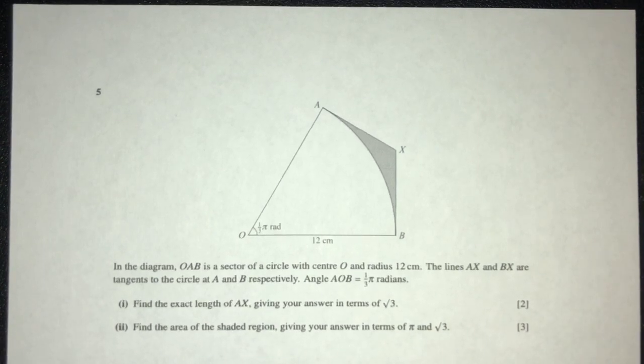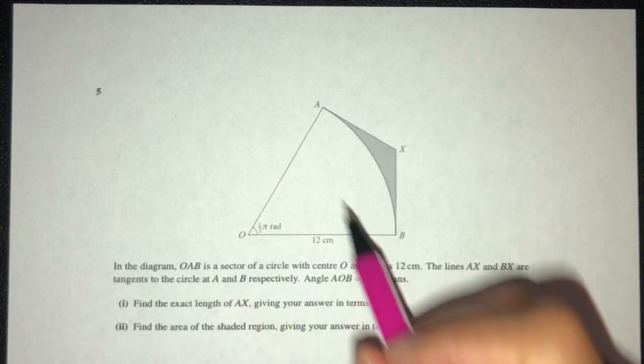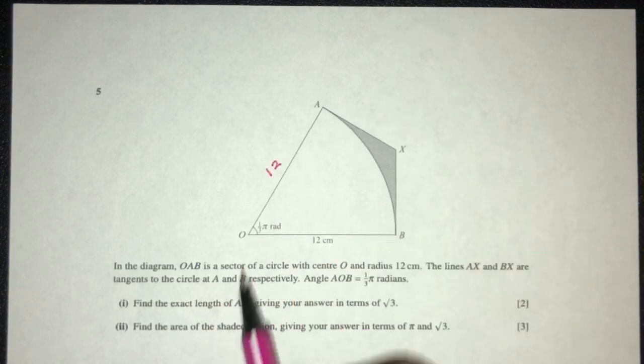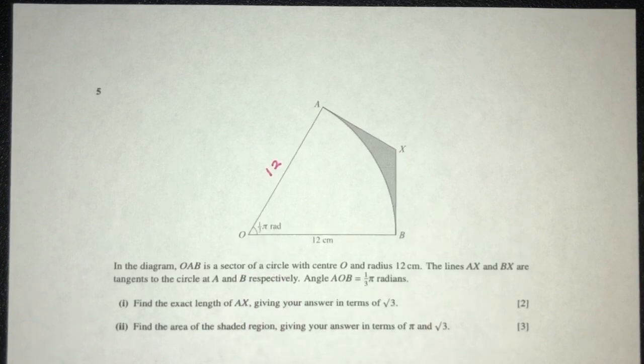Let's move on to the next question. In the diagram, OAB is a sector of a circle with center O and radius 12. So this is the radius, this is also the radius 12, center O, and this is the angle 1/3 π.